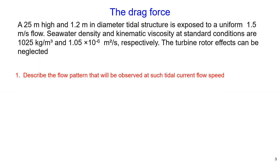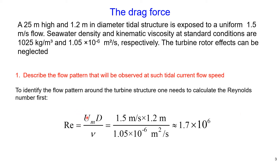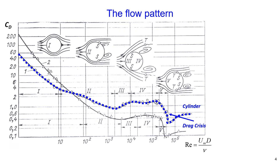To describe the flow pattern around the structure we need to calculate the Reynolds number. Reynolds number is calculated as flow velocity multiplied by the structure diameter divided by kinematic viscosity, and we calculate the Reynolds number to be around 1.7 multiplied by 10⁶. Using the relationship between drag coefficient and Reynolds number we can identify the flow pattern around the structure.